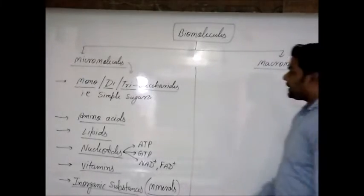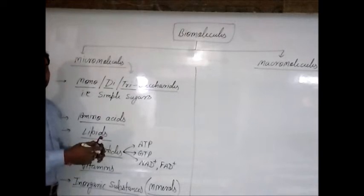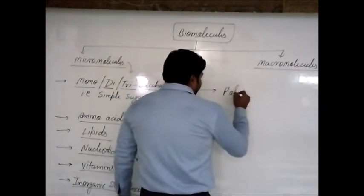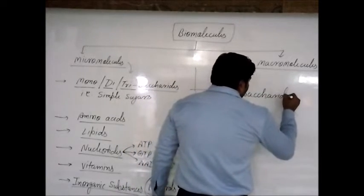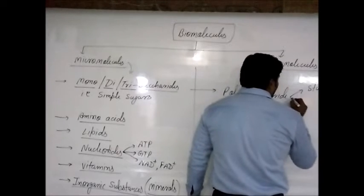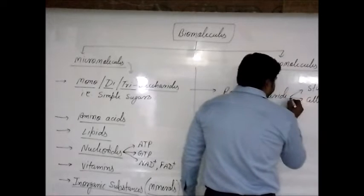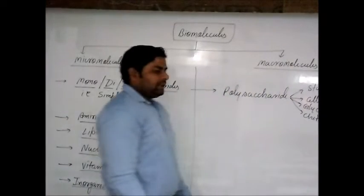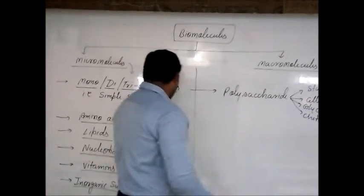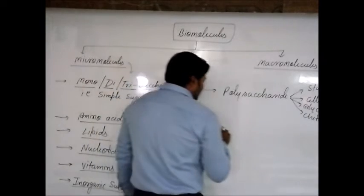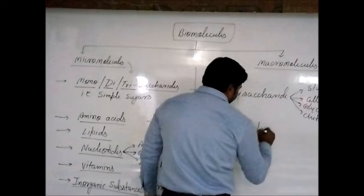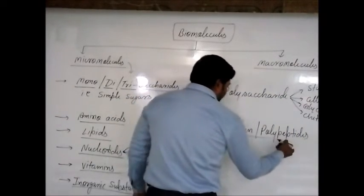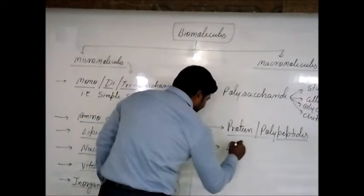For macromolecules, these small units polymerize and make long chains. Polysaccharides are polymers of sugars — like starch, which is a polymer of glucose, cellulose, glycogen, chitin, etc. — and they come in the macromolecule category. When amino acids polymerize, they make proteins, also called polypeptides. These are also macromolecules. Then lipids can be here as well.